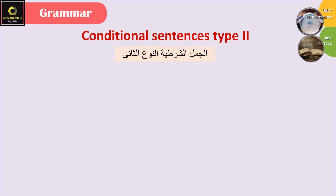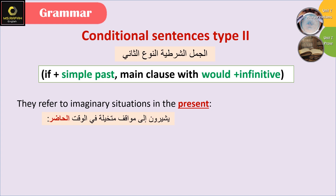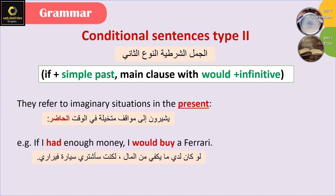Let's talk first about conditional sentences type 2. The form: the if-clause uses the simple past, and the main clause uses would + infinitive. Usage: they refer to imaginary situations in the present. We use this type when we have an imaginary situation in the present. For example: If I had enough money, I would buy a Ferrari — I'm currently imagining that if I had money, I would have a Ferrari.